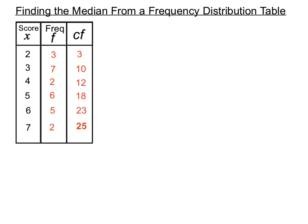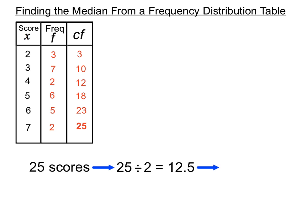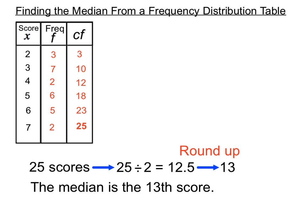We'll use that cumulative frequency column to figure out the median. We have 25 scores, so we need to think about which score is the median. For an odd number of scores like 25, we divide by two to get 12.5, then round up — so we're looking for the 13th score, which will be the median.